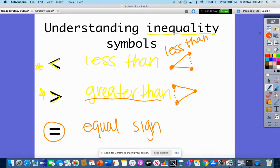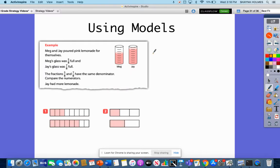So let's try using these symbols. We have some models here. It says Meg and Jay poured pink lemonade for themselves. Meg's glass was 5/8 full, and Jay's glass was 7/8 full. The fractions 5/8 and 7/8 have the same denominator. Compare the numerators.